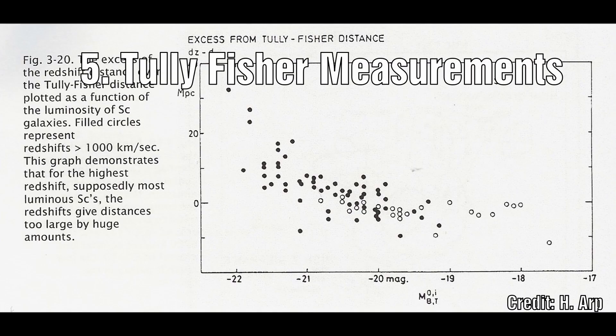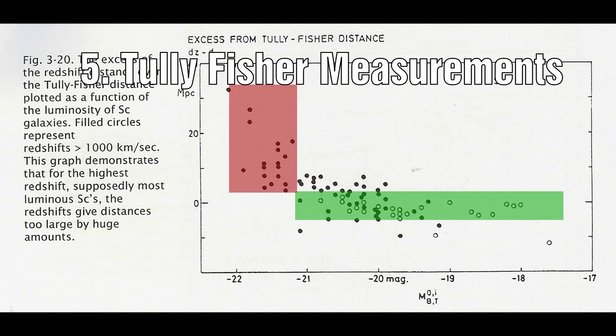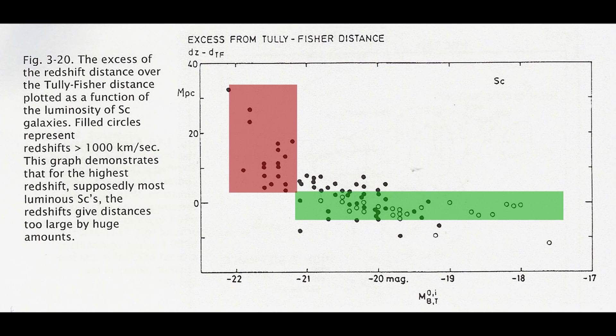Number 5: When you examine a comparison of the Tully-Fisher measurement with redshift distance for some of the active Seyfert galaxies, we see that there is a large discrepancy with the highest redshift galaxies. This, for me, is one of the key pieces of evidence that shows that redshift is not an accurate measure of distance.